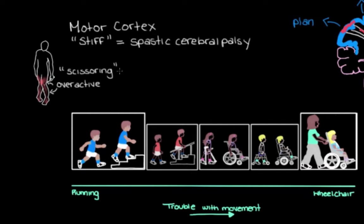These overactive muscles are really stiff, making it hard for the person to get out of these positions. Another common pattern is that the person walks around on their toes — almost on tiptoes — because the muscles in the calves get really tight and pull the heel up, forcing the person onto their toes.